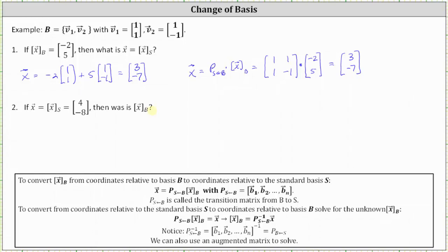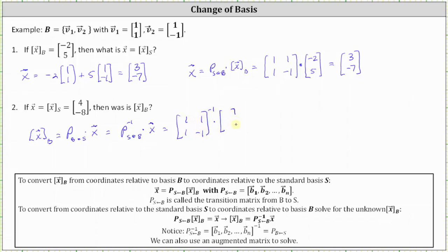For number two, we want to go in the opposite direction. We are given the coordinates of vector x using the standard basis vectors as (4, negative 8), and we are trying to find the coordinates of vector x relative to base B. The coordinates of vector x relative to base B equal the transition matrix from S to B times the coordinates of vector x relative to the standard basis vectors. The transition matrix from S to B equals the inverse of the transition matrix from B to S — which is the matrix (1, 1; 1, negative 1) — times the coordinates (4, negative 8). So the next step is to find the inverse of this matrix.